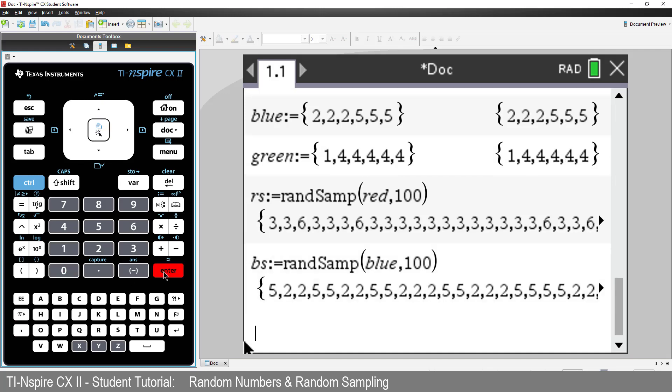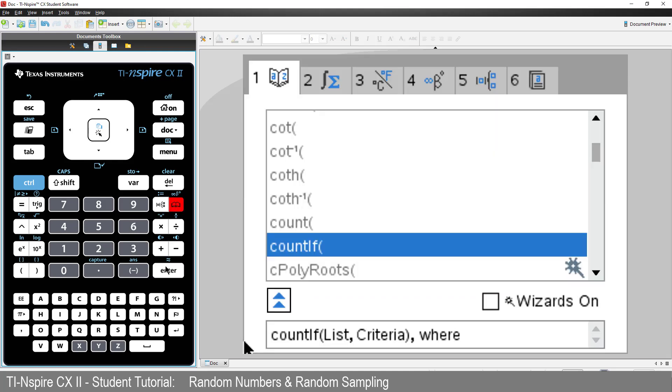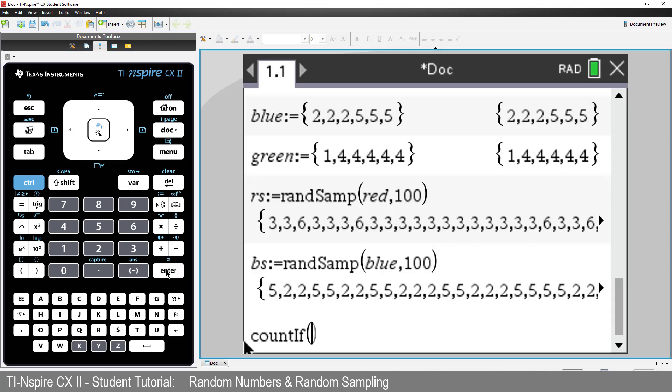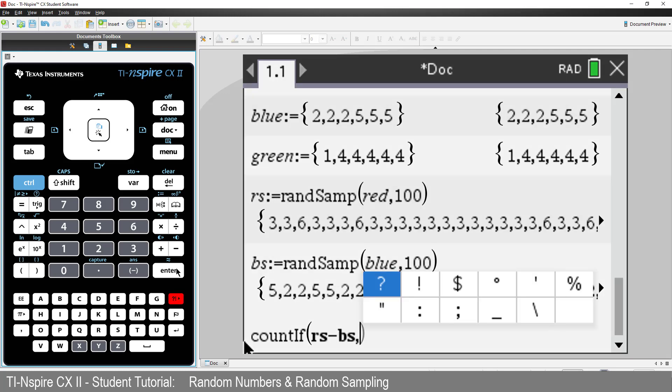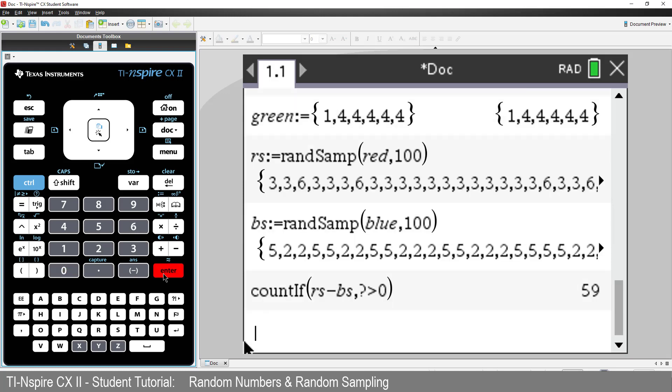Now we need to compare them. I'll use the COUNTIF command again. If red wins, then rs minus bs will be greater than 0. The condition needs a question mark. So we have COUNTIF, rs minus bs, comma, question mark, is greater than 0. So in our sample, red won 59 out of 100 times. So red seems to be a little bit better than blue.